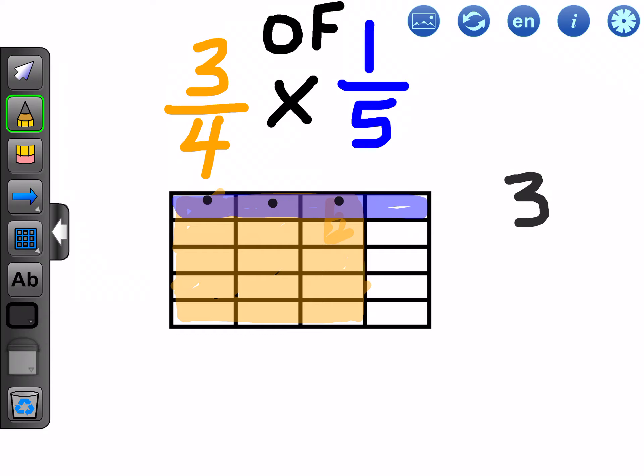And now the question is three out of how many pieces. So let's take a look here at how many pieces we have in total. Let's count the rows and the columns to figure this out here. So there are one, two, three, four, five, six, seven, eight, nine, ten, eleven, twelve, thirteen, fourteen, fifteen, sixteen, seventeen, eighteen, nineteen, twenty. There are twenty pieces. So three out of twenty. So three quarters of one fifth is three twentieths.